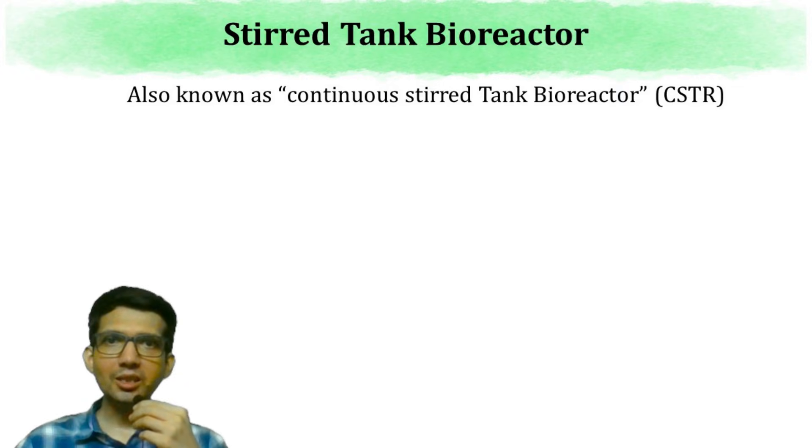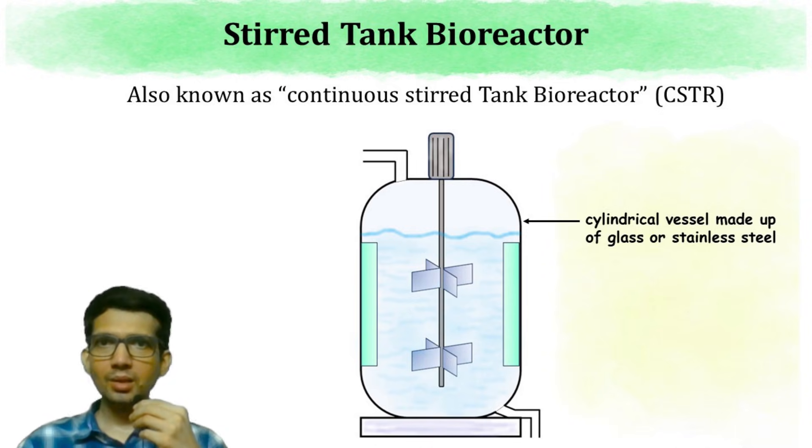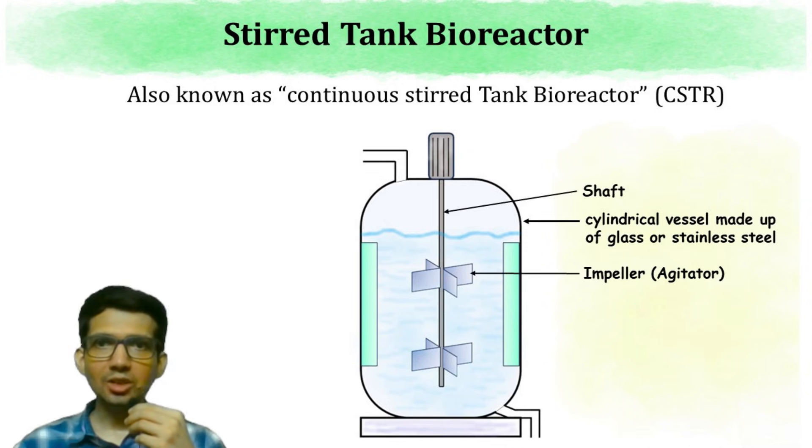The first one is Stirred Tank Bioreactor which is also known as Continuous Stirred Tank Bioreactor. This type of bioreactor has a classical design where a cylindrical vessel made up of glass or stainless steel is used. The central axis of this vessel contains a shaft which has impellers. This shaft is connected with an electric motor. When switched on, the function of the impeller is to provide mechanical mixing of solution which is filled in this bioreactor.